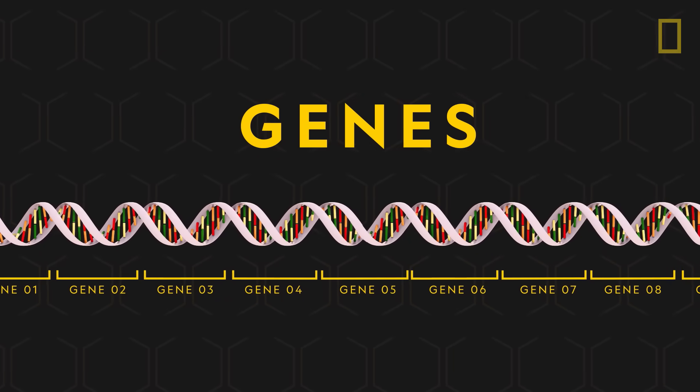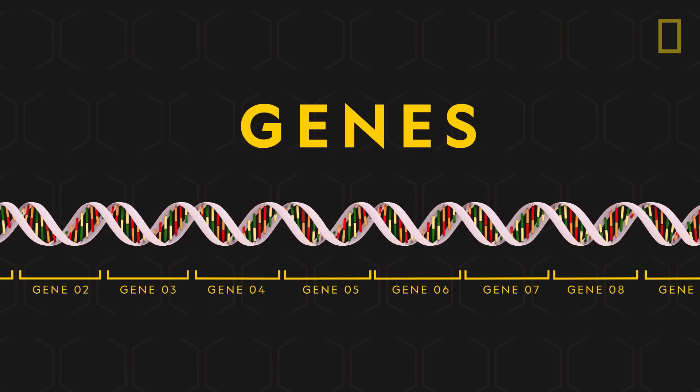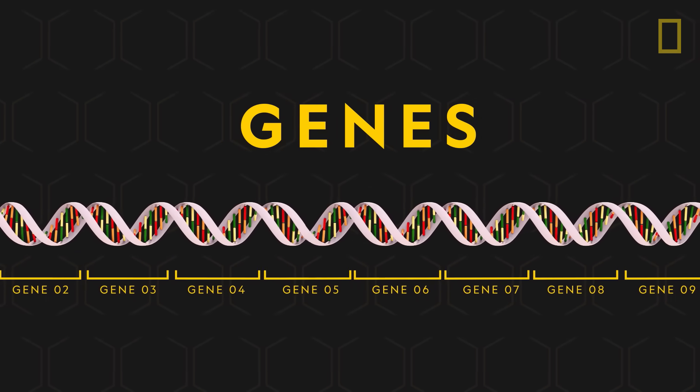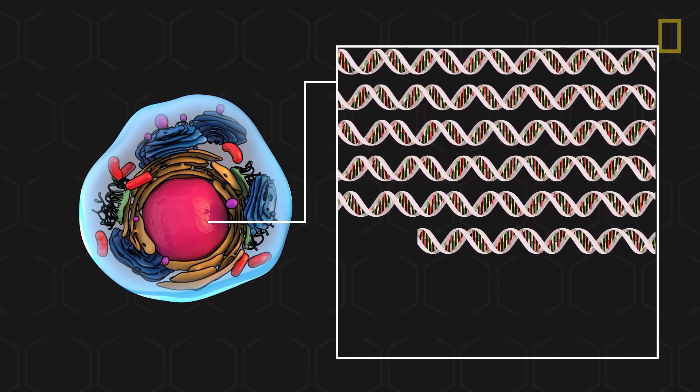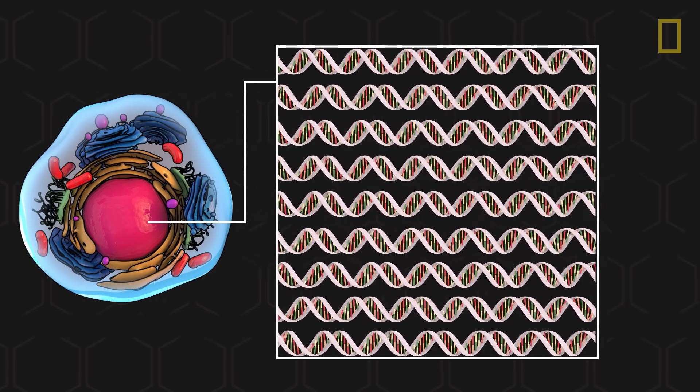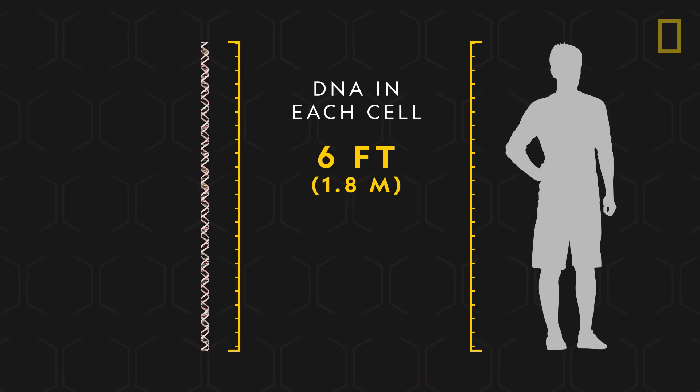And it is within those genes that chemical compounds provide the coding for all information about a person's inherited traits. Human cells contain so much DNA to carry this large amount of information that, if unraveled, the DNA in each cell would be over six feet long.